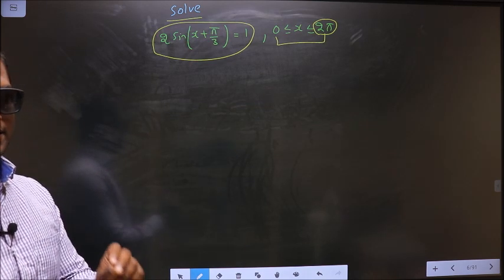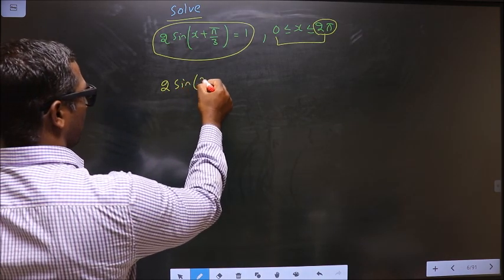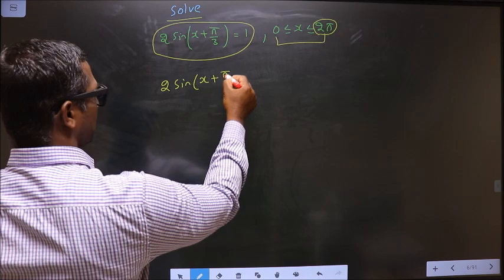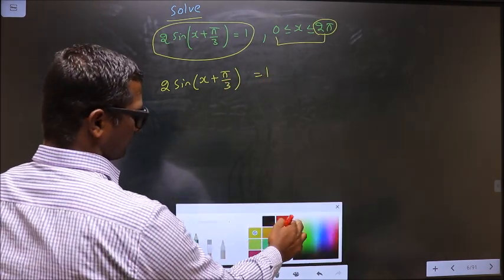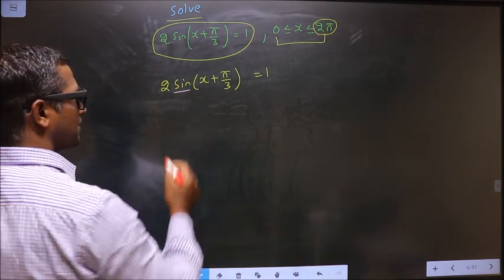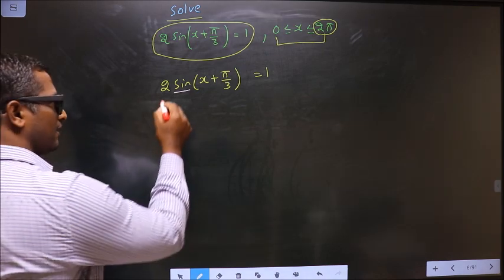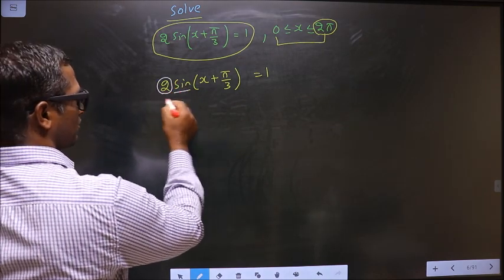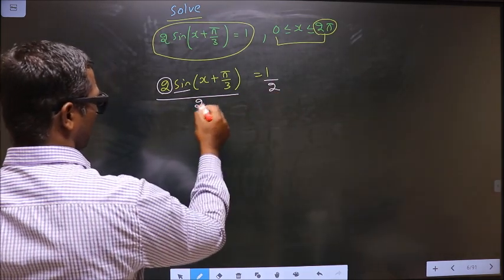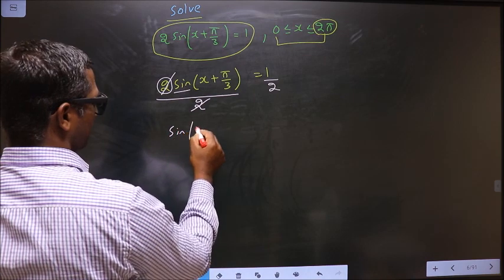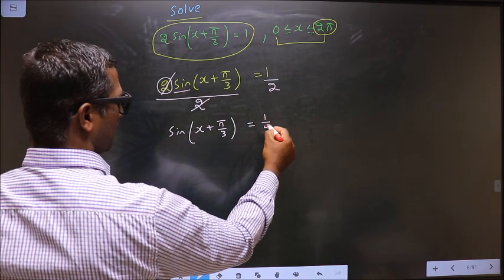The given equation is 2sin(x + π/3) = 1. Here you have sin, so you make sin the subject. For that you should remove this 2. So to remove the 2, you divide by 2.